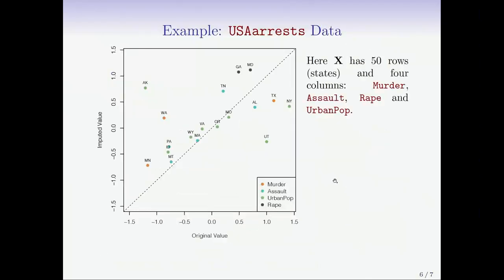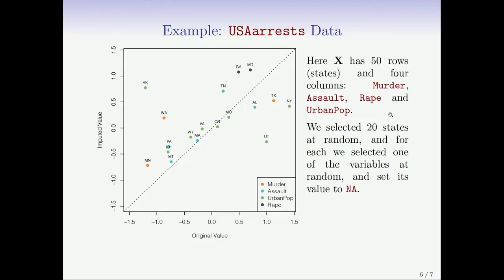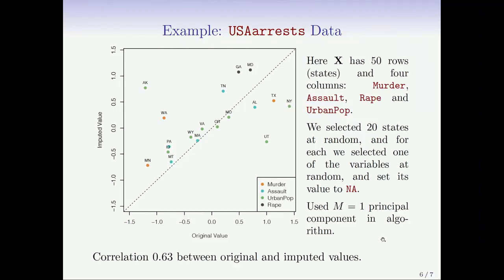We'll use the USA arrest data as an example. It's a small matrix. X has 50 rows, the states, and four columns: the different types of crime—murder, assault, rape—and then there's the variable urban population, percent of the population in that state that lives in urban areas. This data set is complete. So we artificially made some elements missing. We selected 20 states at random. And for each, we selected one of the variables at random and set its value to NA. We used M equals one principal component in the algorithm.